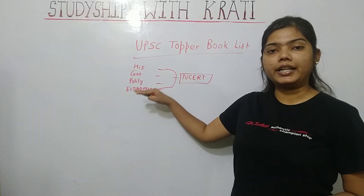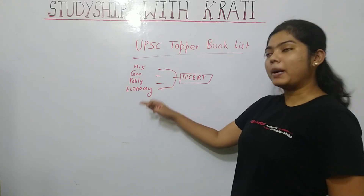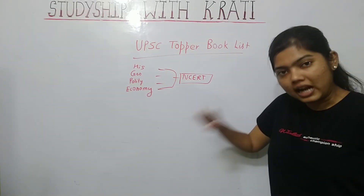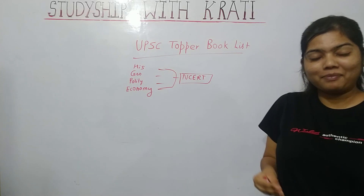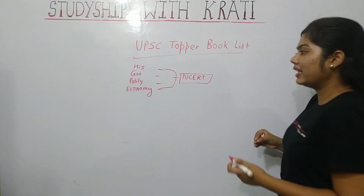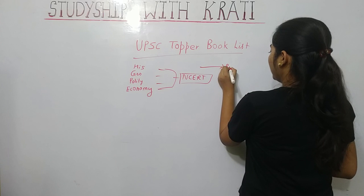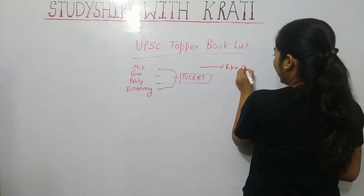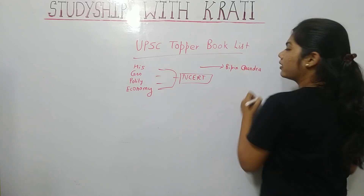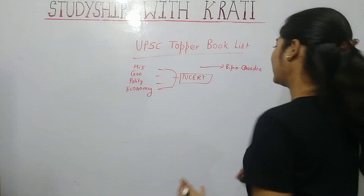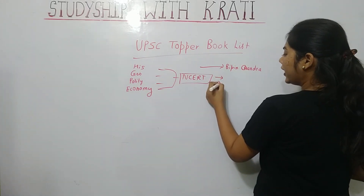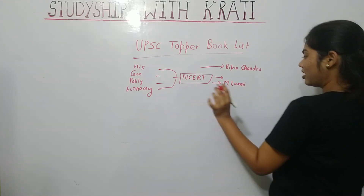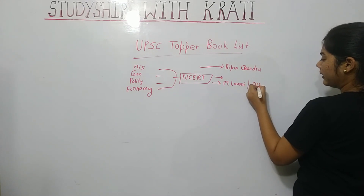NCRT is a fundamental thing, but after that you also have to read standard reference books. For History, there's Vipin Chandra — it's a popular book among UPSC aspirants and covers many questions well. For Polity, you know M. Lakshmikanth, and there's also a book by D.D. Basu. For Economy, there are different books available.